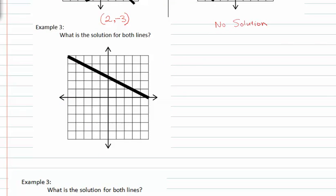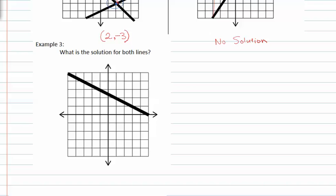In example three, we're asked what is the solution for both lines? This means there are actually two lines here, but you can't see both because they're on top of each other. Remember that the same lines have infinite solutions, meaning that any point on either one of the lines will satisfy both lines values. Because of this, we say that there are infinite solutions.